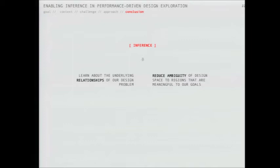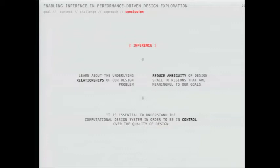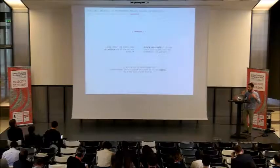To conclude: in this presentation we saw that enabling statistical inference in the design space helps us learn about the underlying relationships of our design problem, and also reduce the ambiguity of the design space to regions more meaningful to our goals. It is really important and essential for us to understand the systems we design. We tend to treat the system as a black box - plugging in all these plugins and just playing with sliders looking at outputs - but it would be nice to actually understand the relationships to get a good global picture.